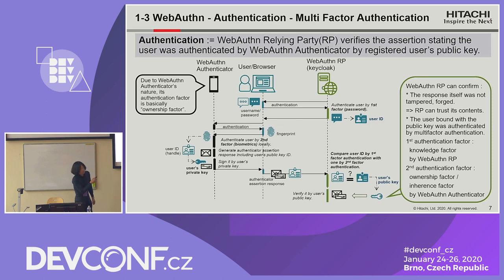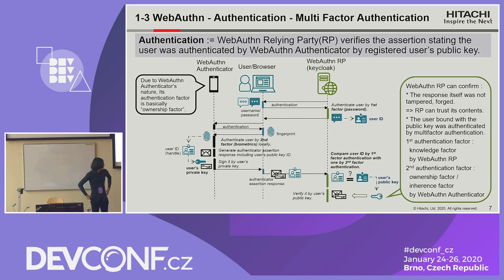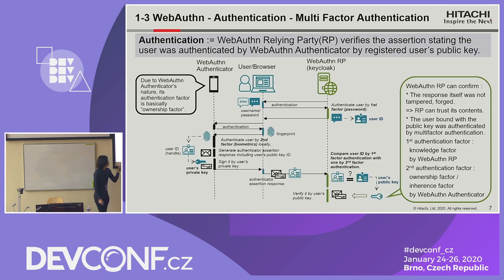This slide shows multi-factor authentication by WebAuthn Relying Party. First, the WebAuthn Relying Party authenticates the user by the first factor, like password. Then afterwards, the WebAuthn Relying Party also authenticates the same user but using the second factor, like biometrics.